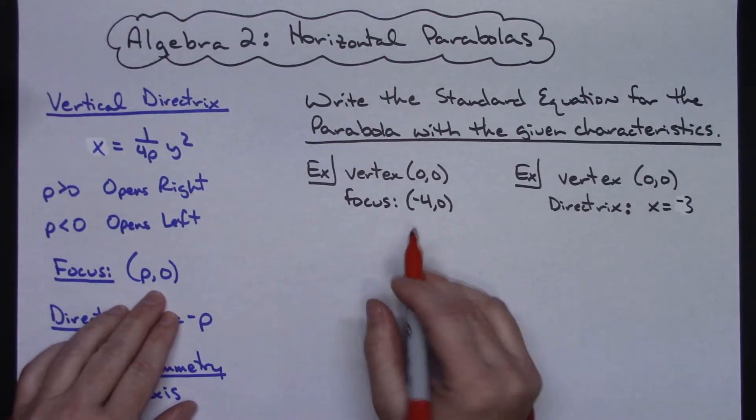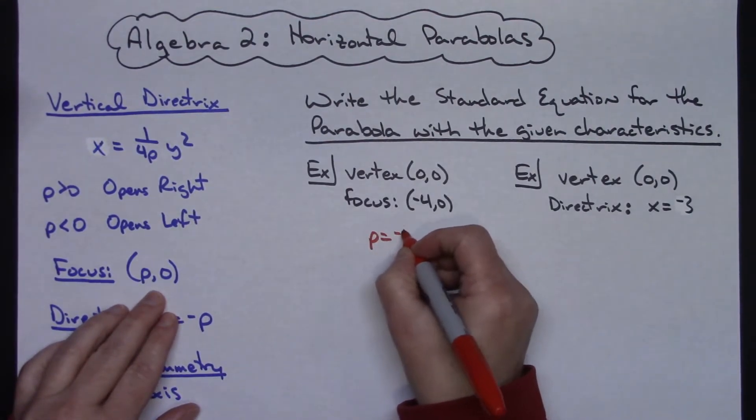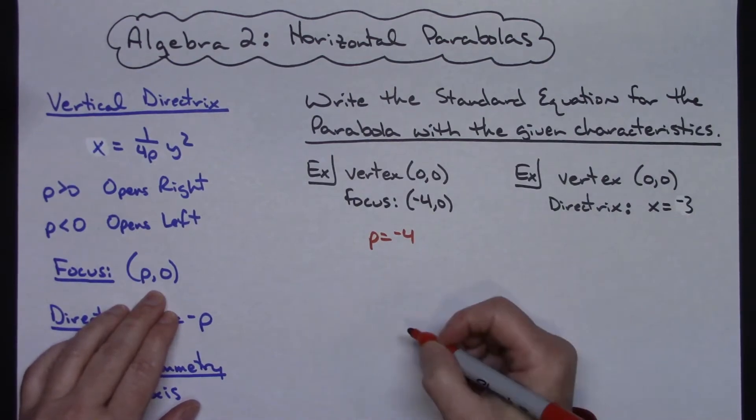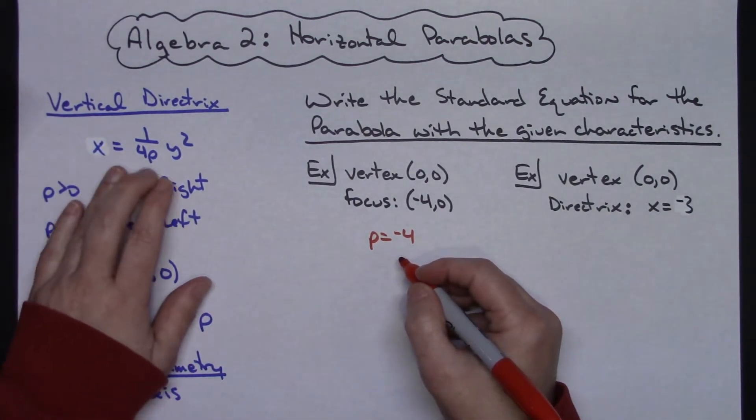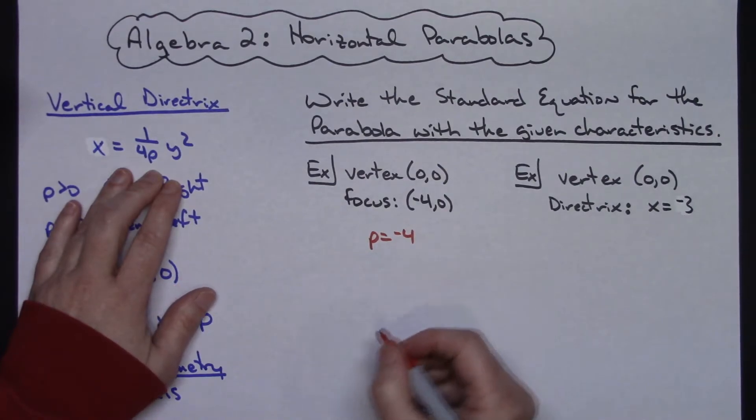What that tells me right there is it tells me that my p equals negative 4. So as soon as I know what my p is then I can come back up here and I can write that equation in standard form.